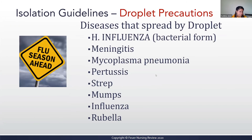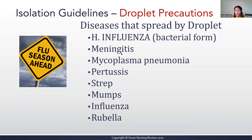The common diseases spread by droplet include meningitis, mycoplasma pneumonia, pertussis, strep, mumps, influenza, and rubella. You may see a question where a patient presents with influenza and you're asked which isolation precaution the nurse should institute — the answer is droplet precautions. We're currently in a pandemic, so we would also add COVID-19 here, along with some additional precautions in practice. Next is airborne transmission.